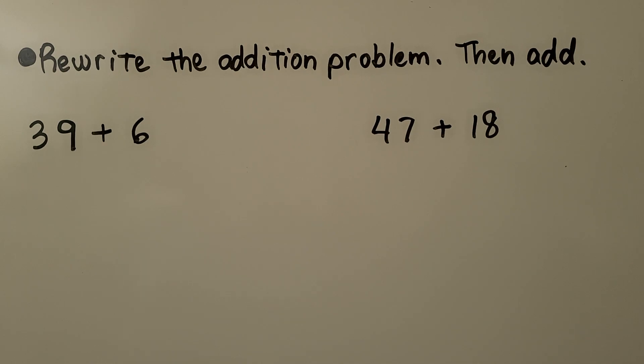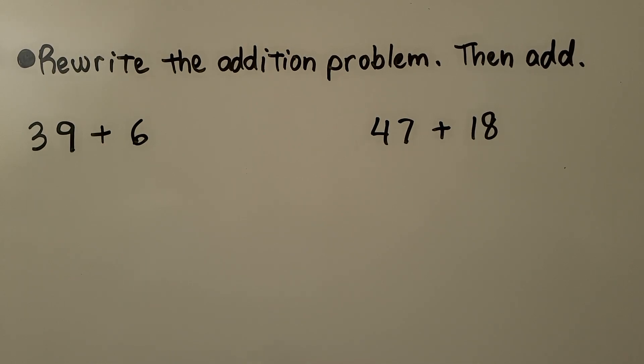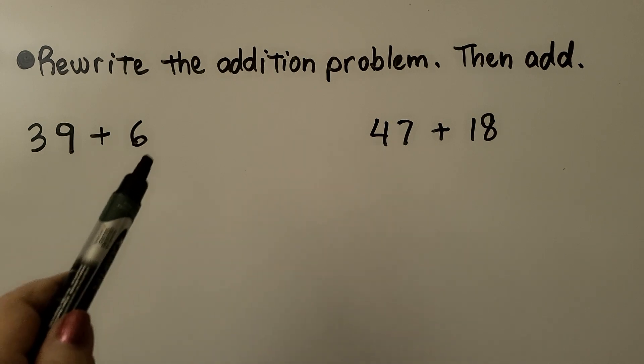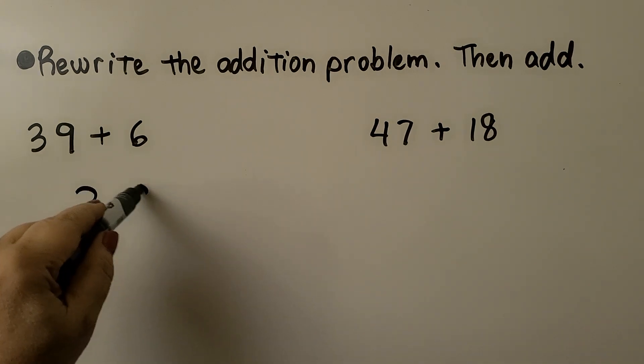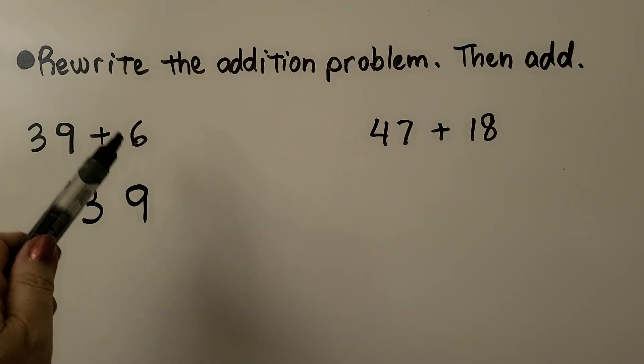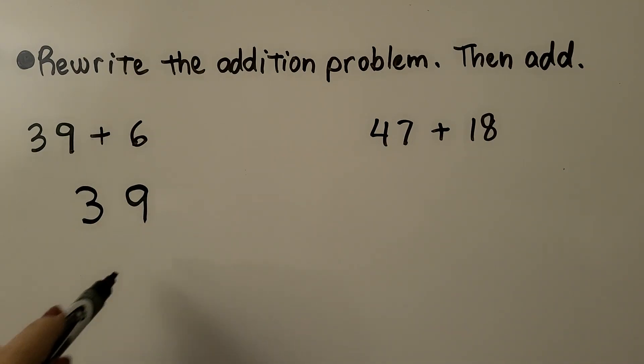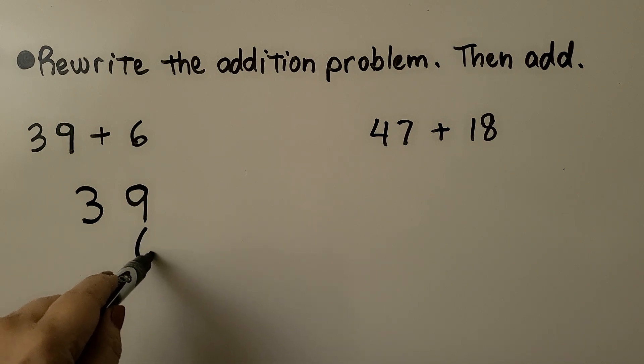We need to rewrite the addition problem, then add. We have 39 plus 6. We write 39. When we add 6, there's no tens. That's 6 ones, so we put the 6 in the ones place.